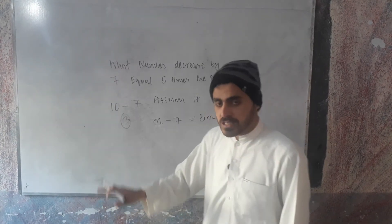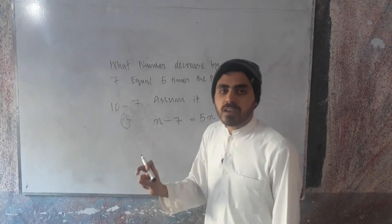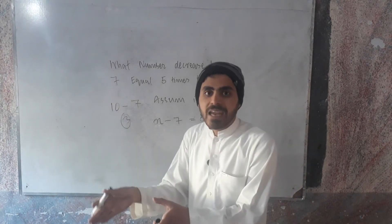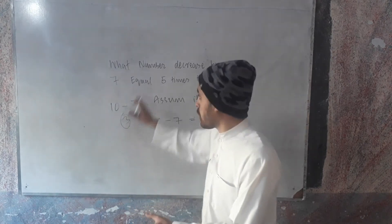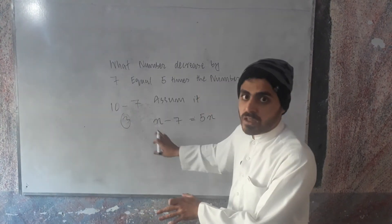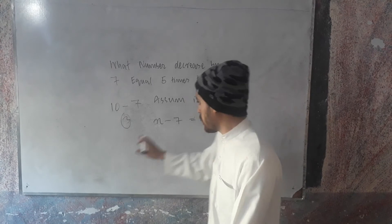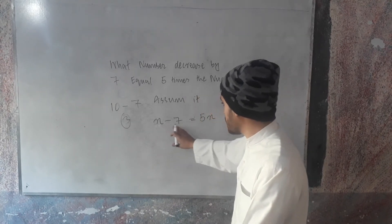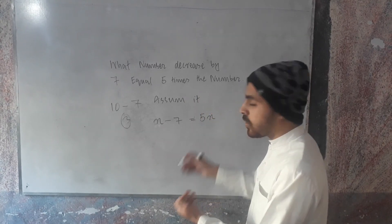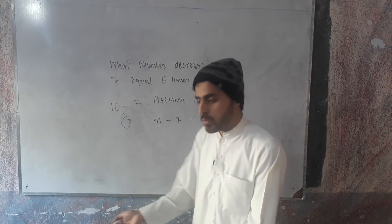This is now a simple equation. The trick here is to translate the statement of the problem into an equation, and we did this: x minus 7 equals 5 times x. Now we have to find the value of x, and that would be the answer.